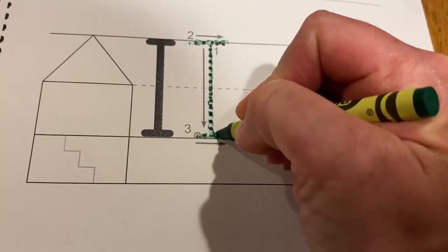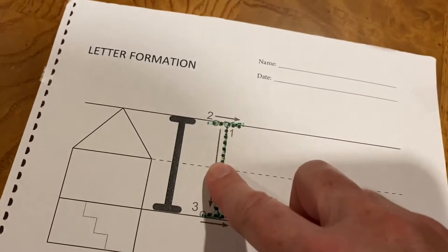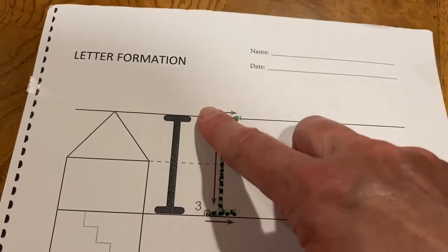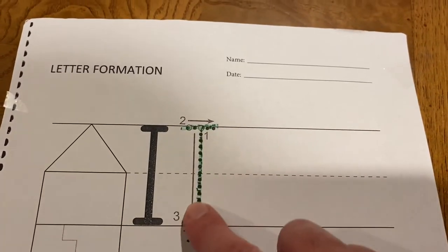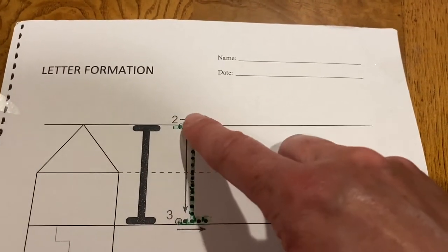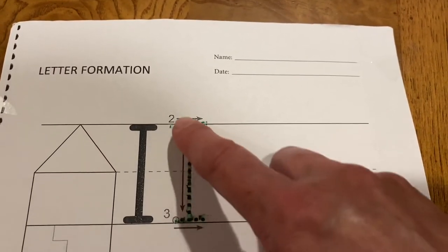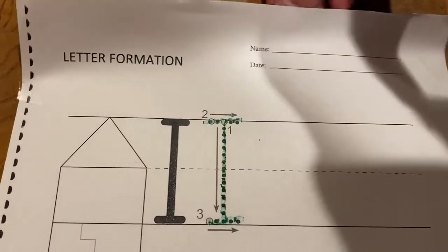Take your tracing finger and trace: line down, line across, line across. Again: line down, line across, line across. Again: line down, line across, line across. Now you can take your bumpy screen out and put it aside and draw two more uppercase I's: line down, line across, line across.